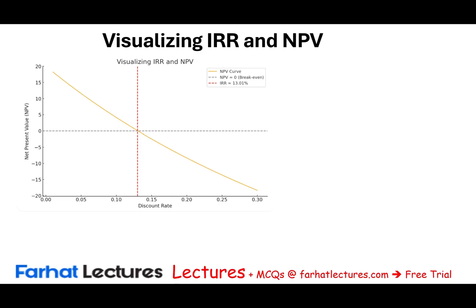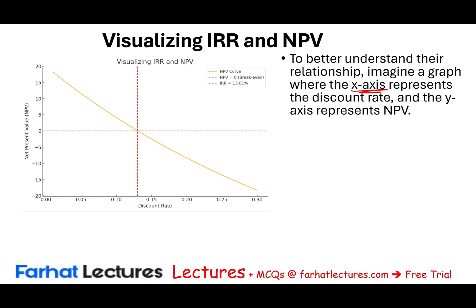Now let me visualize IRR versus NPV. I want to build this graph from scratch. The x-axis is the discount rate — starting at zero, then 5%, 10%, 15%, 25%, and so on. The y-axis is the NPV, the net present value figures.